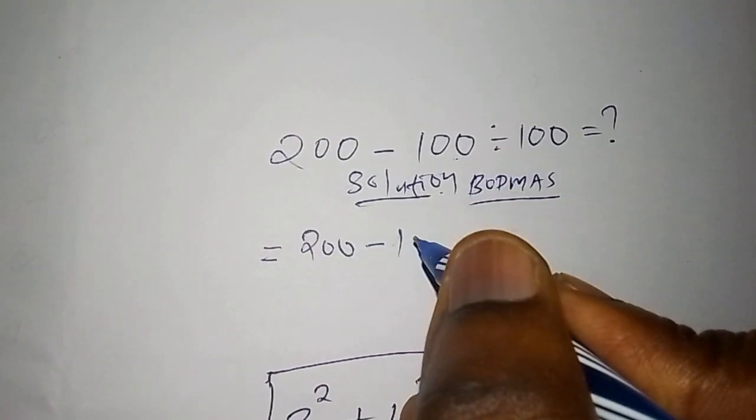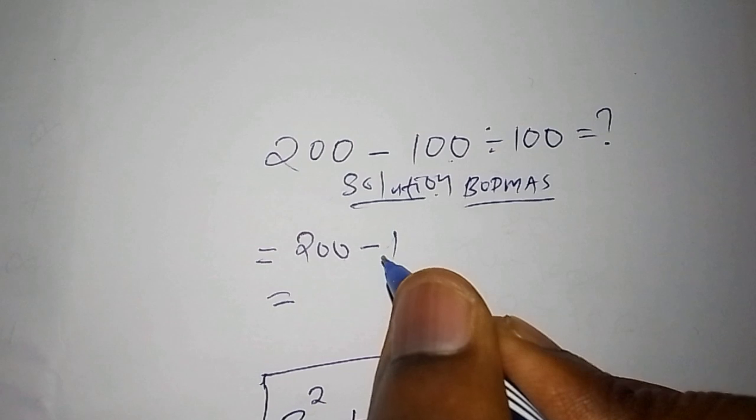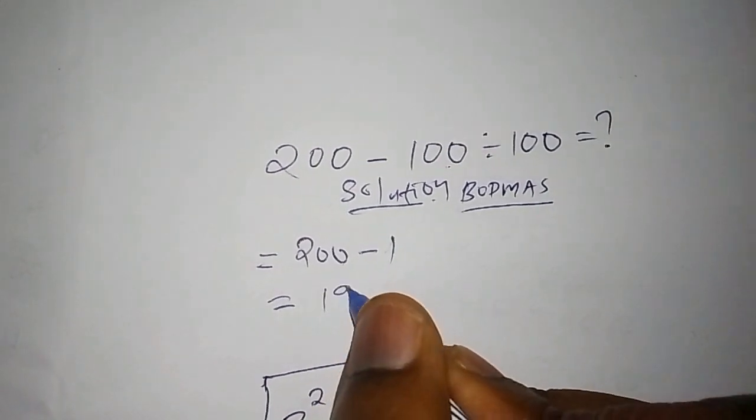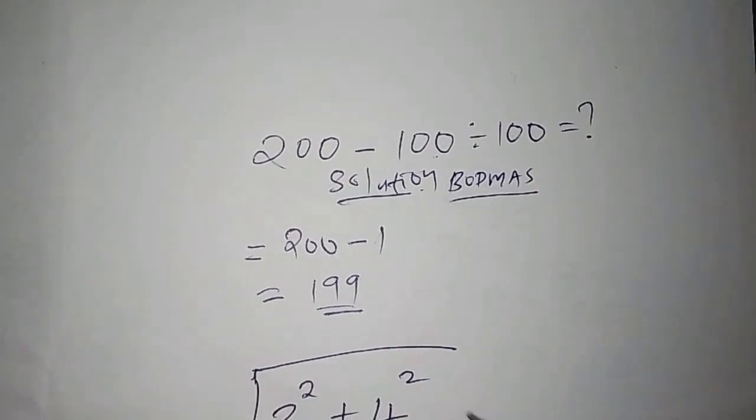Then now we shall have 200 subtract 1. The answer is 199. So I want us to move to the next bit: work out the square root of 3 squared plus 4 squared.